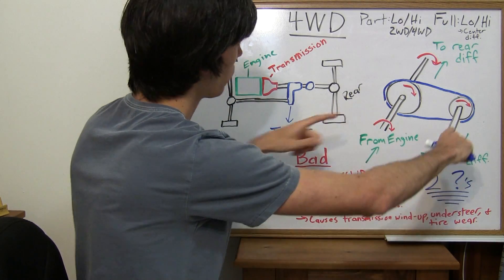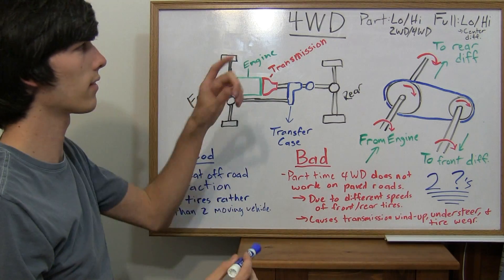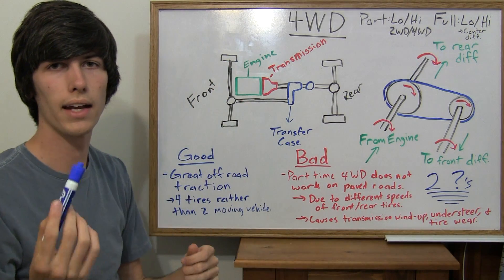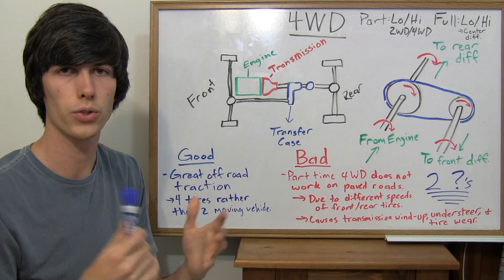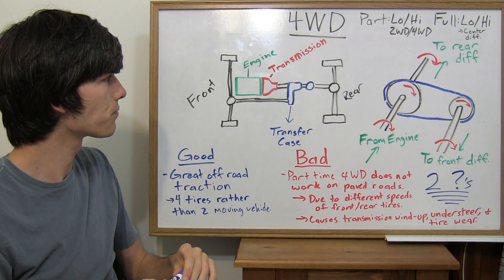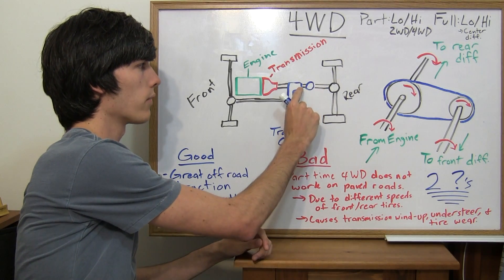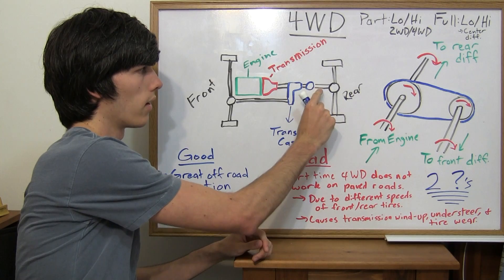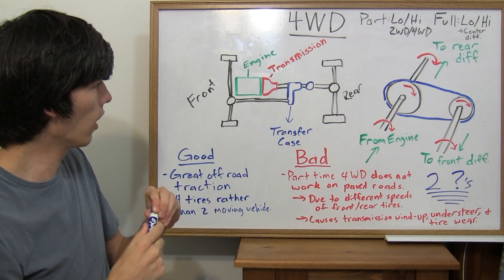So this front, the front wheels, can rotate at a different speed than the rear wheels, and this allows you to go around corners and not have this wind-up, or the understeer, or the extra tire wear that you definitely would not want. So the purpose, once again, of this differential is to allow a different speed at that rod right there than this rod right here, that shaft.